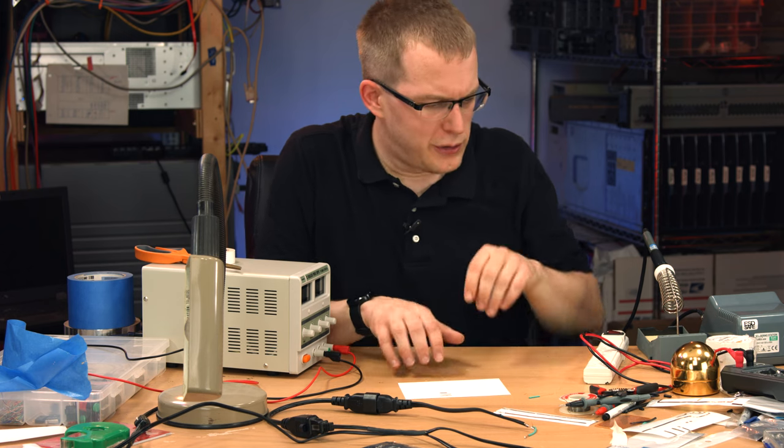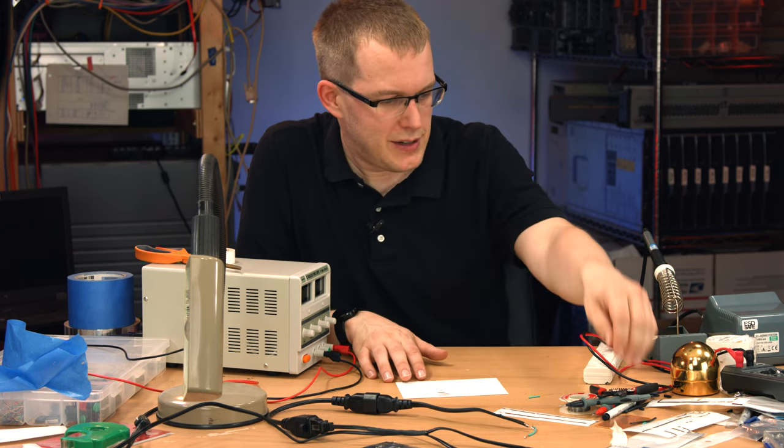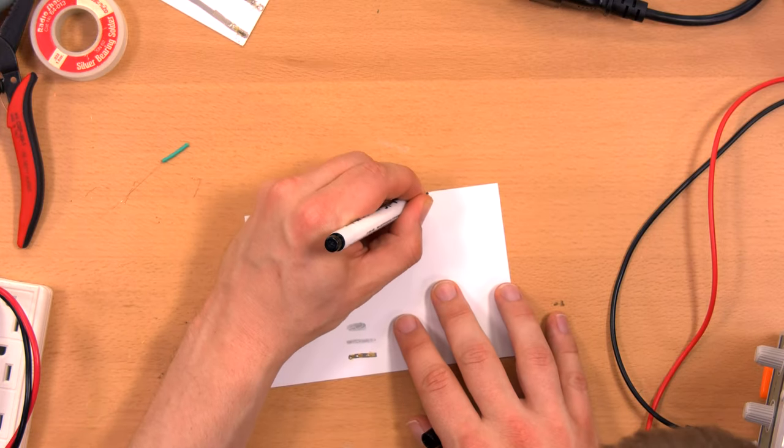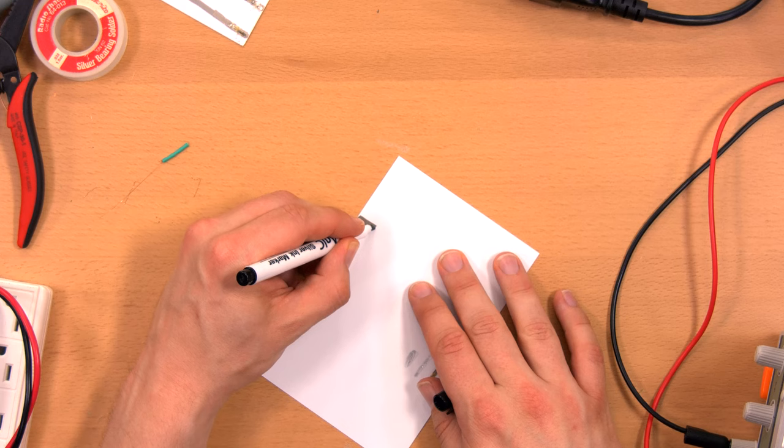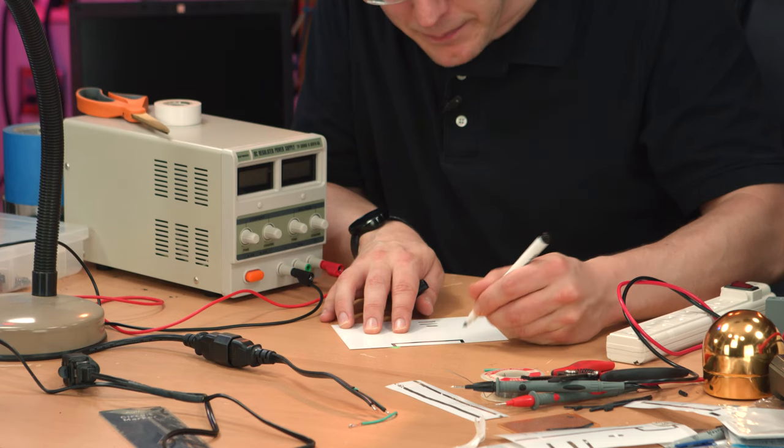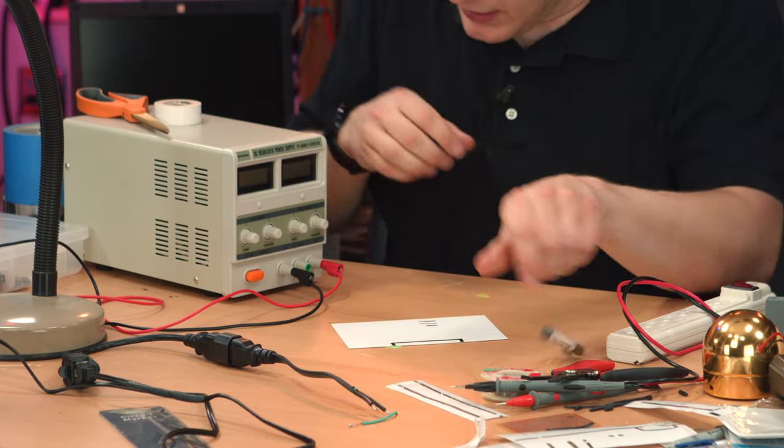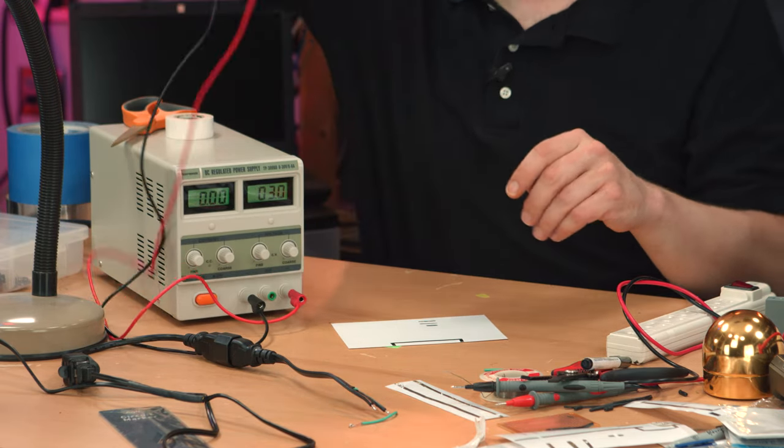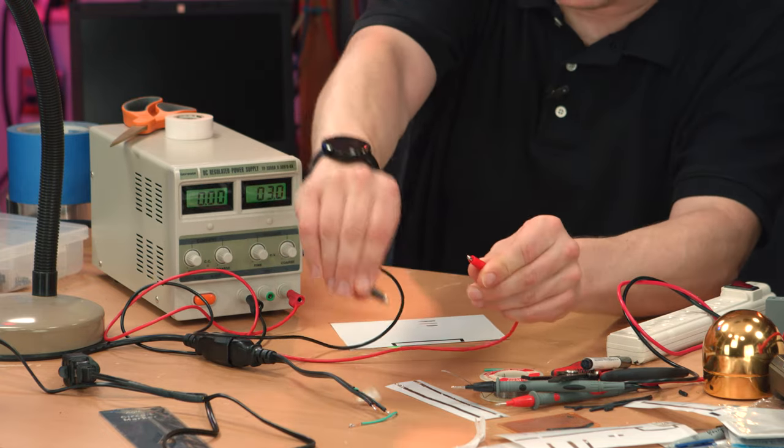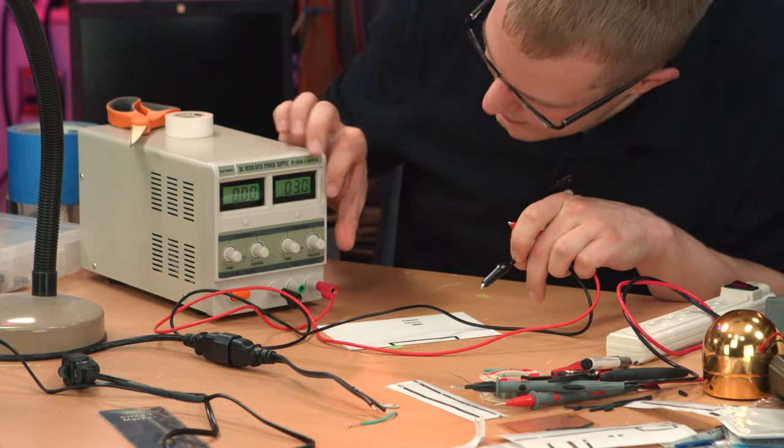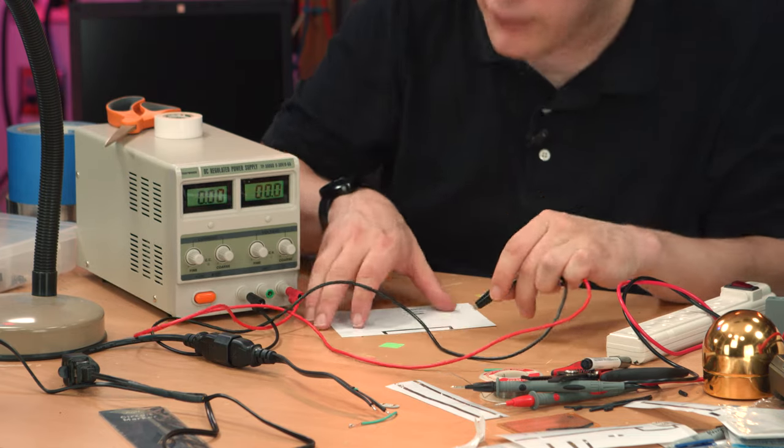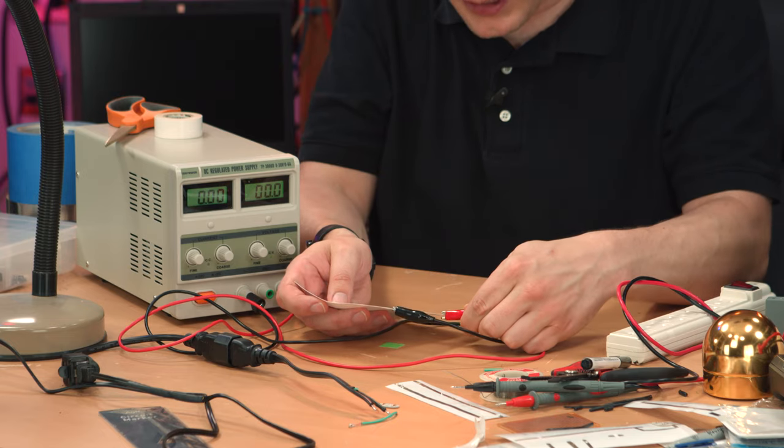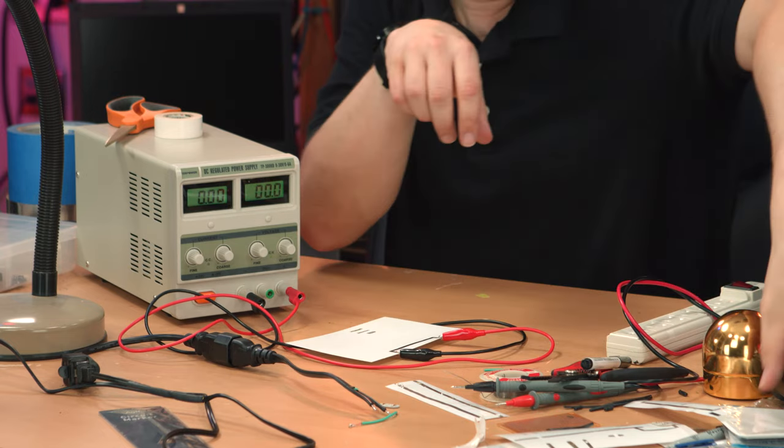And the final thing I want to do just again for fun is take my marker pen. And this is the Canon paper now. Like I said, the Canon paper works pretty well. I didn't have a problem with it. So I'm going to create a little path like that, turn on my bench top power supply, which actually still has the LED connected to it. Take that off.